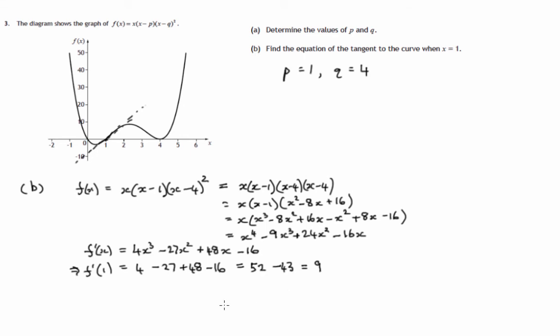So what have we discovered? We've discovered that the tangent passes through 1, 0 and has gradient 9. Remember, if a line passes through the point A, B and it's got gradient M, its equation is y minus B equals M times x minus A.